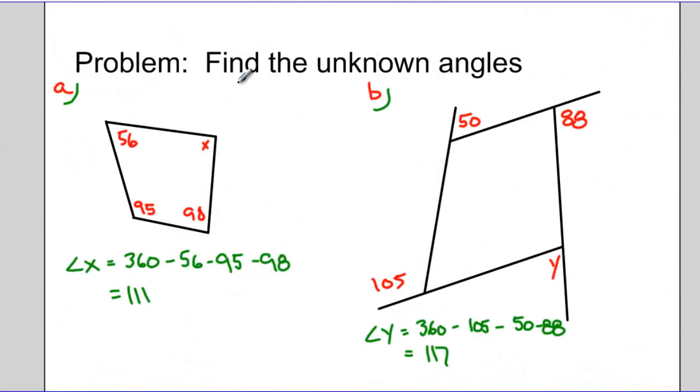So here's our solutions to the two problems. In problem A, you are given three interior angles of the quadrilateral. We know that inside a quadrilateral, all the angles add up to 360 degrees. If we subtract the three angles that we know, we end up with our fourth and final angle, which was 111 degrees.